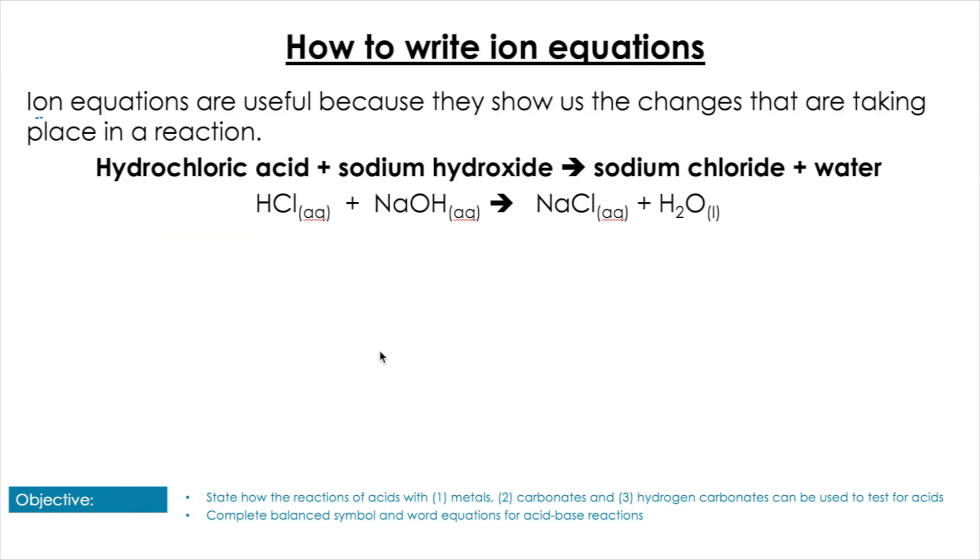So the last we want to have a look at is ion equations. Now these are going to come in important in Unit 9 as well, but really they're just to illustrate what's actually occurring in the reaction. So if we have that little aqueous sign, then we know we have an ionic compound that's broken down. So HCl we could write as H+ and Cl-. Same with NaOH being Na+ and OH-. With NaCl being Na+ and Cl-. H2O of course is a liquid, it's in its covalent form, so would not break down into ions.